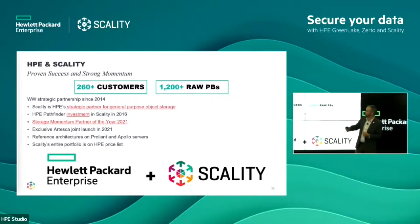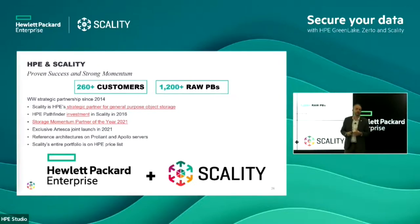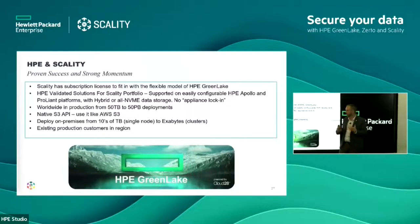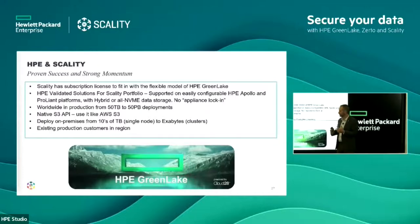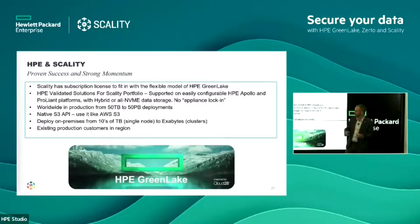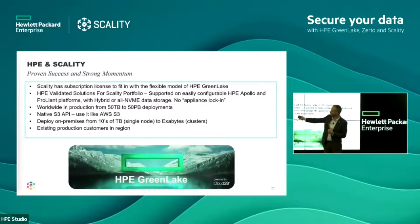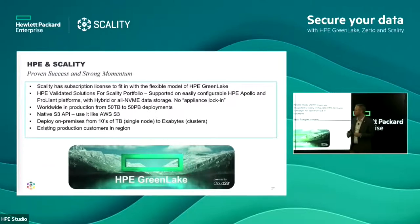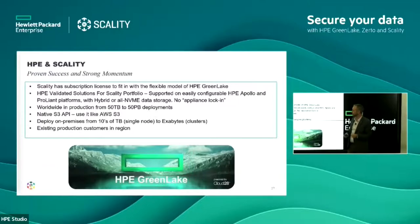We've been named Storage Momentum Partner of the Year. We jointly launched a product together called Artesca, with reference architectures on the Apollo and ProLiant series servers. All our products and part numbers are on the HP price list, making it easy to quote and size the solution. Over 260 customers, with lots of raw petabytes deployed around the world. The GreenLake element makes it easy to have cloud-like economics as well as cloud-like features — a tried and tested solution across all different sizes globally, with some customers running 50 or more petabytes on a single platform. It's a scalable product, well-suited for the HP GreenLake model.